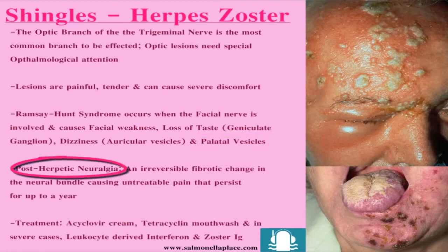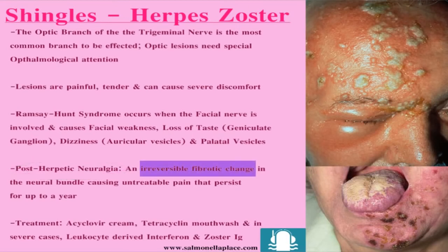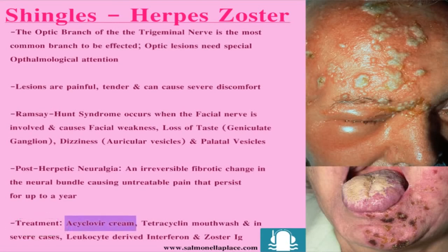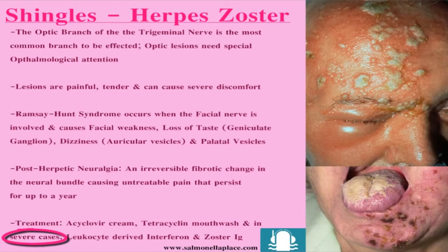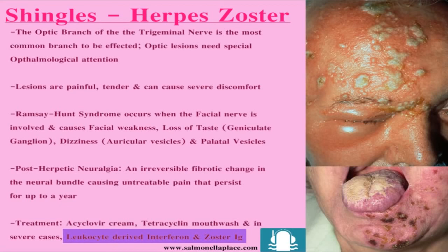Post-herpetic neuralgia is an irreversible fibrotic change in the neural bundle which causes untreatable pain that can persist for up to a year. Treatment includes acyclovir cream, an antiviral, which can be applied to mucous membranes or directly onto the skin; a tetracycline mouthwash, an antibacterial agent that has been seen to help with oral lesions; and in severe cases such as immunosuppression or debilitating systemic disease, leukocyte-derived interferon or zoster immunoglobulin.